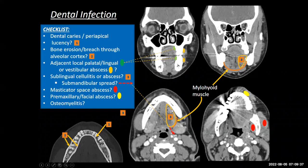You want to look at the sublingual space in the floor of the mouth. The floor of the mouth is contained by a muscle called the mylohyoid muscle — like a hammock — that separates the oral cavity from the true submental and submandibular space. The orange line shows how that mylohyoid muscle runs in the coronal plane, and the sublingual space is shown by yellow lines here.